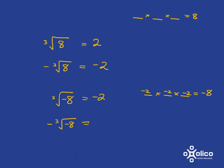This final one is just saying I want the negative of this cube root. We've already worked out that this cube root is negative 2. So what they're saying is I want the negative of negative 2, which is just going to be positive 2.